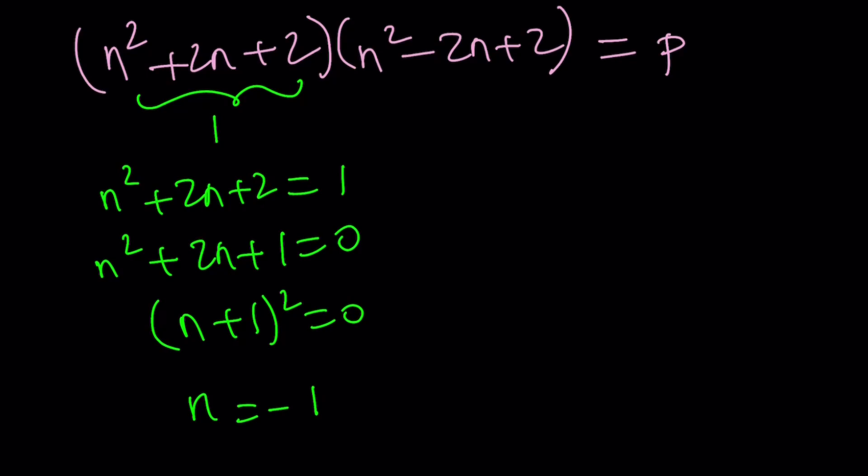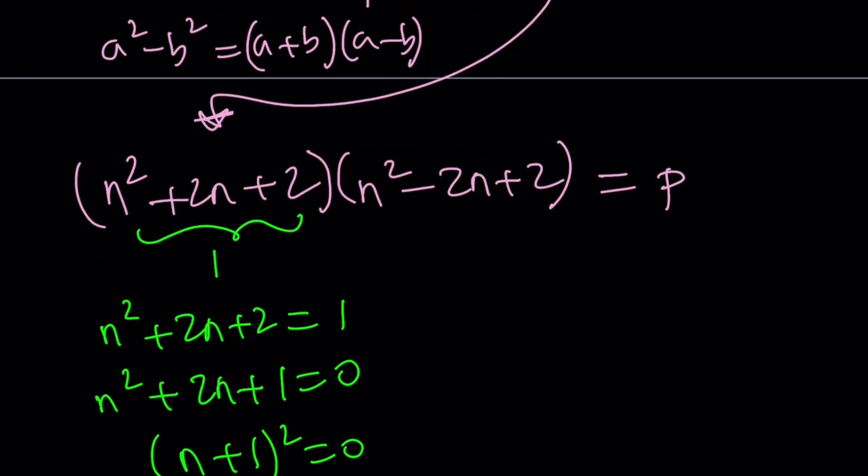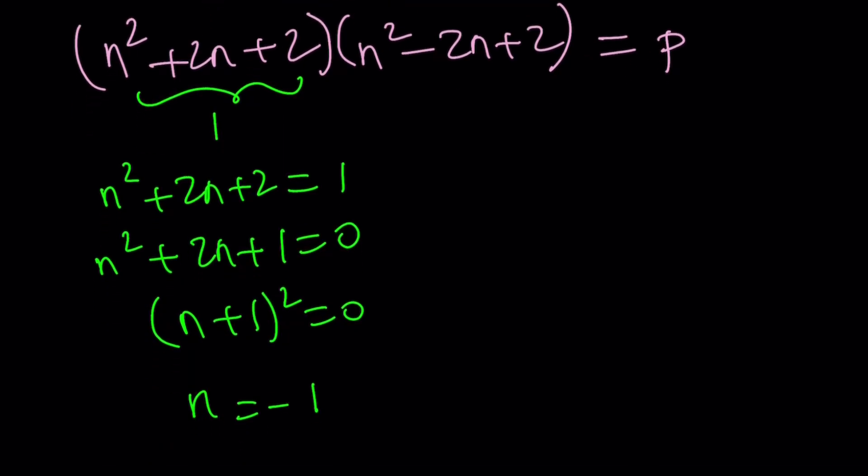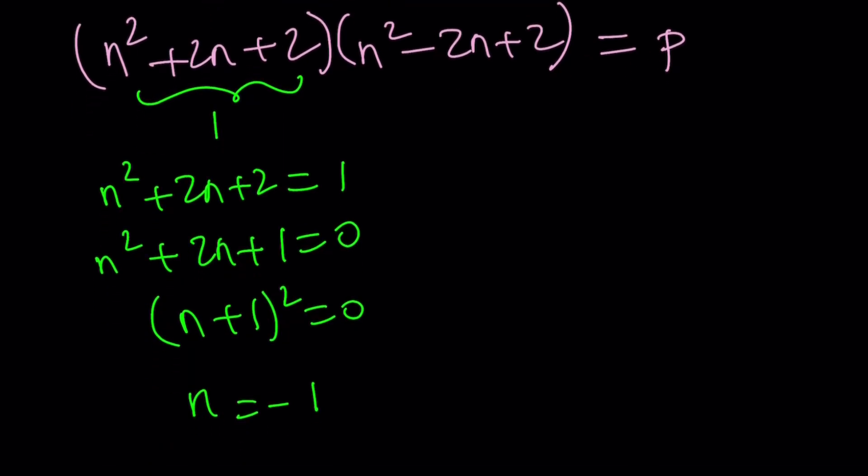So can n equals negative 1 be a solution? Yes. If we're looking for integer solutions for n, negative 1 is okay. If we're looking for positive integers, it's not okay. So let's go ahead and look at the other case.